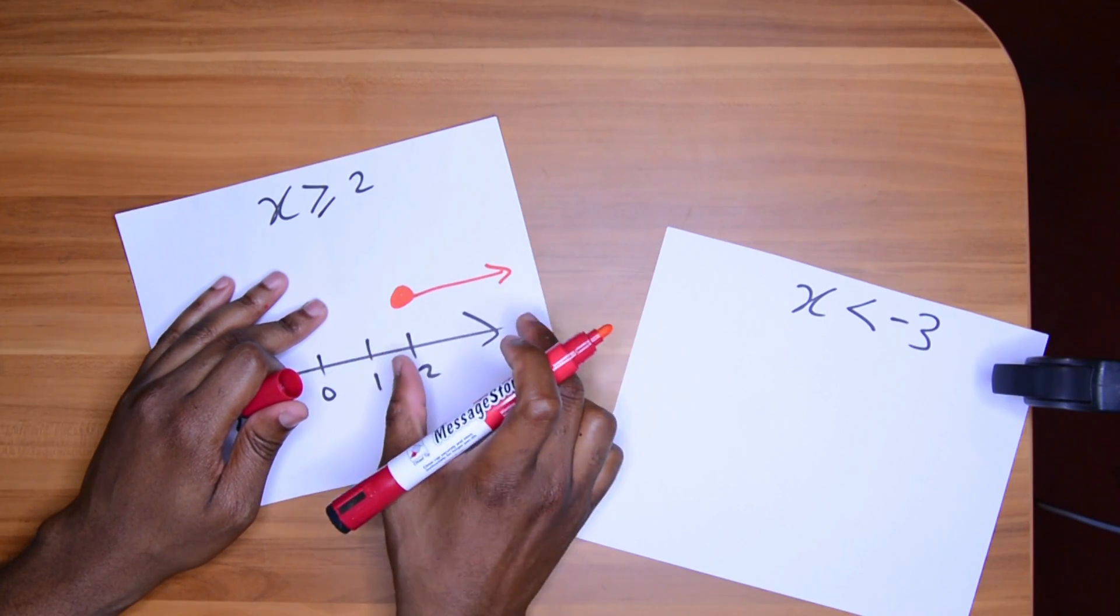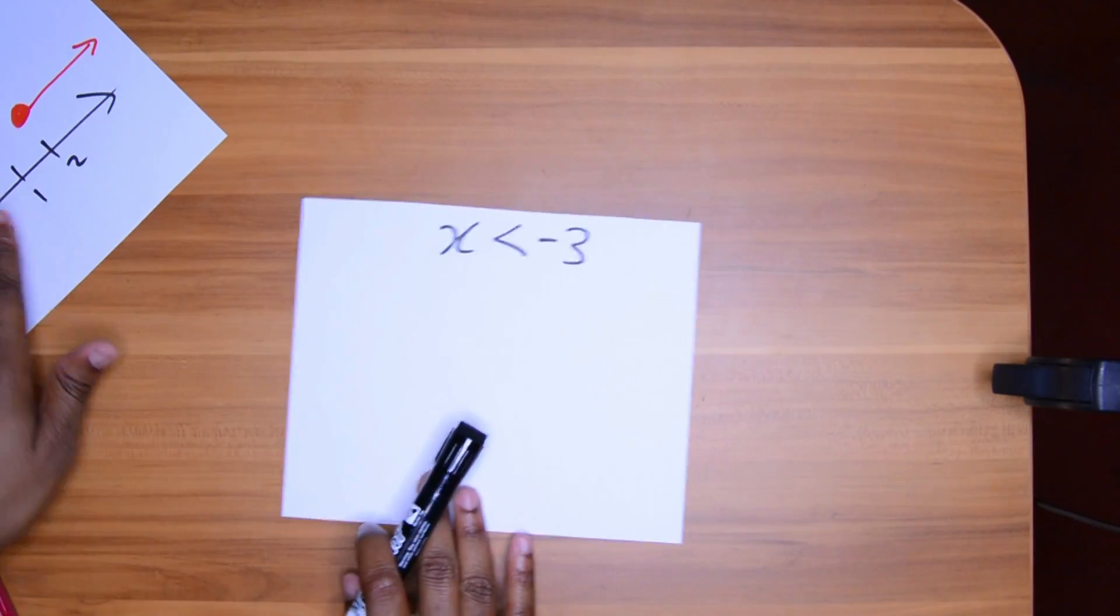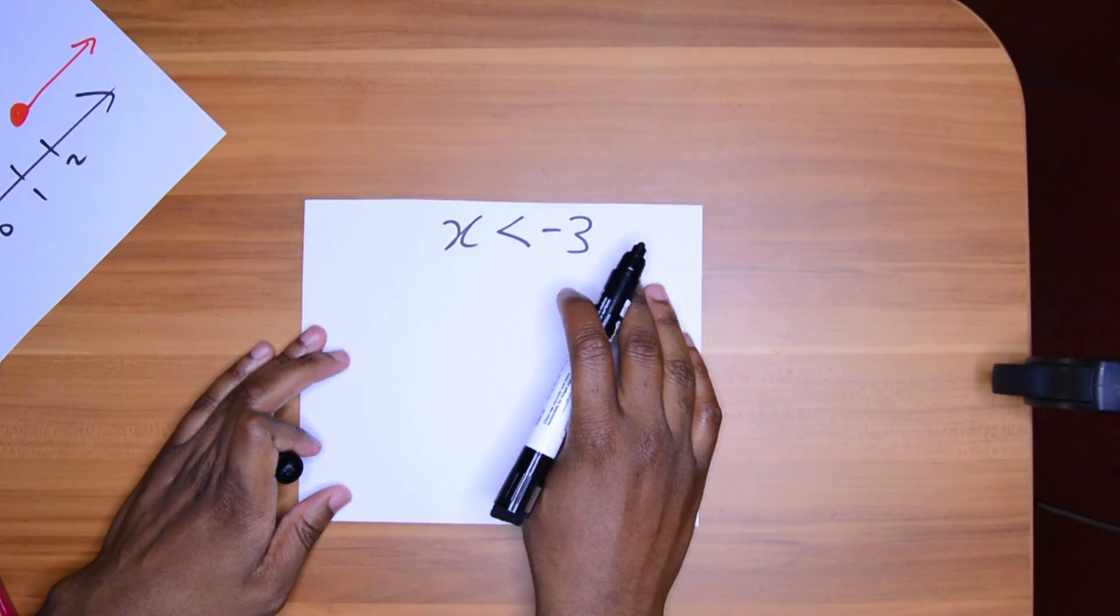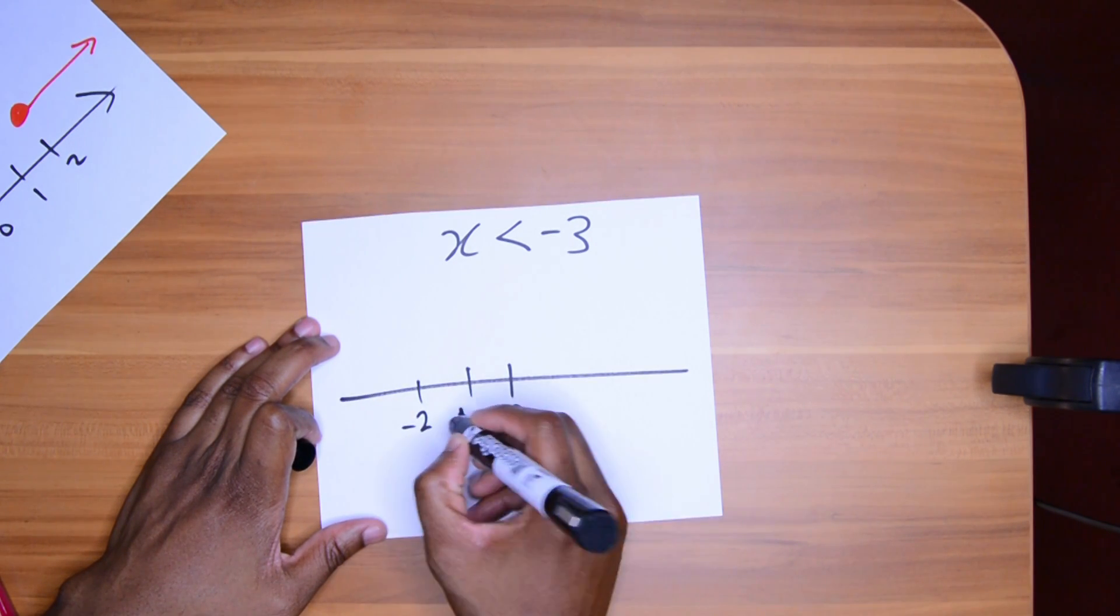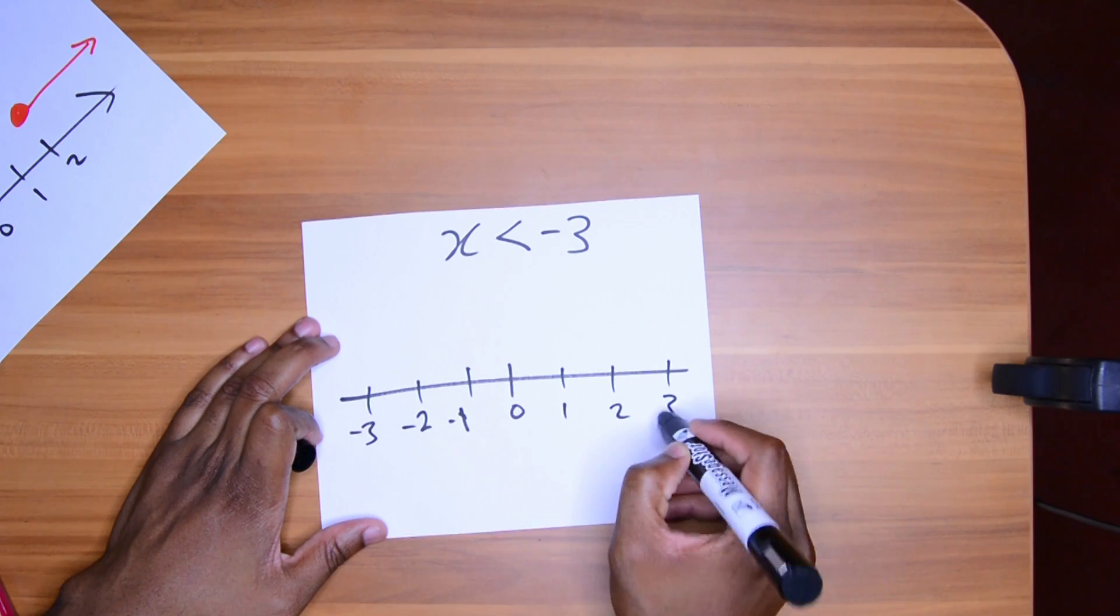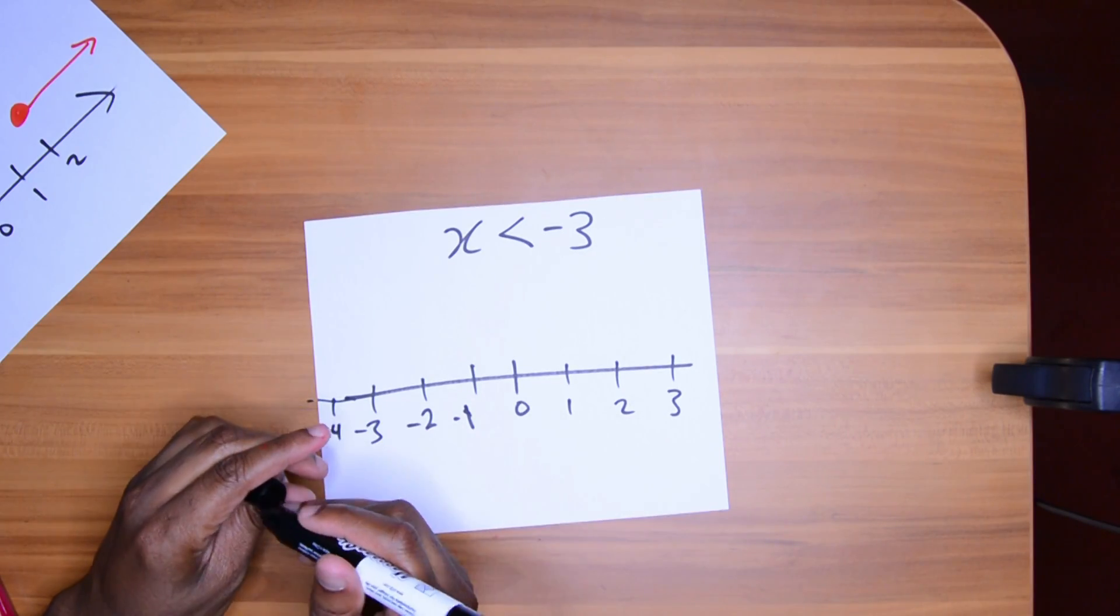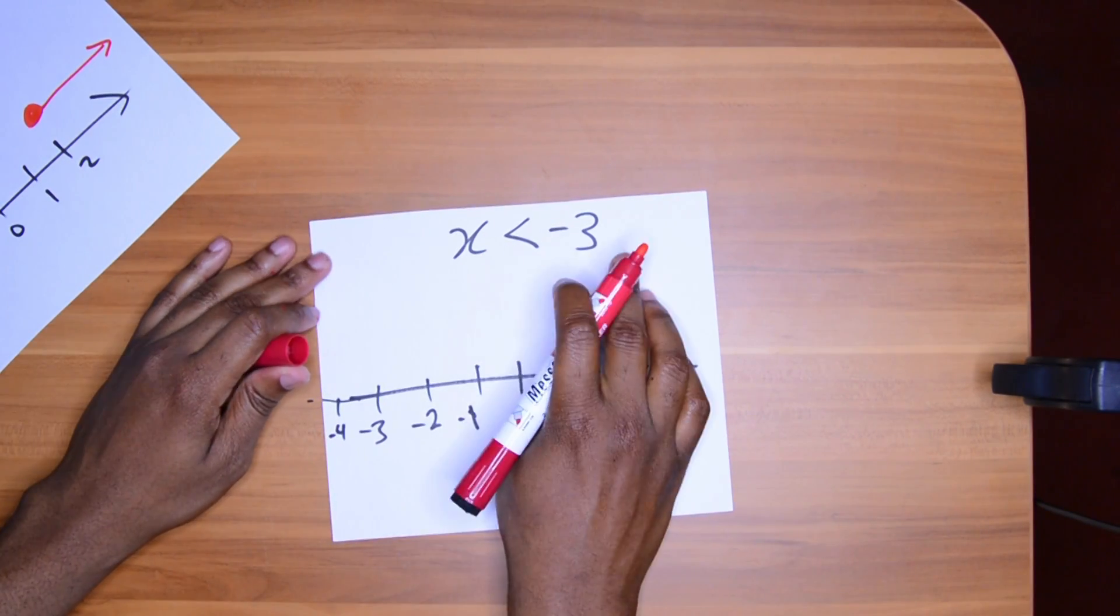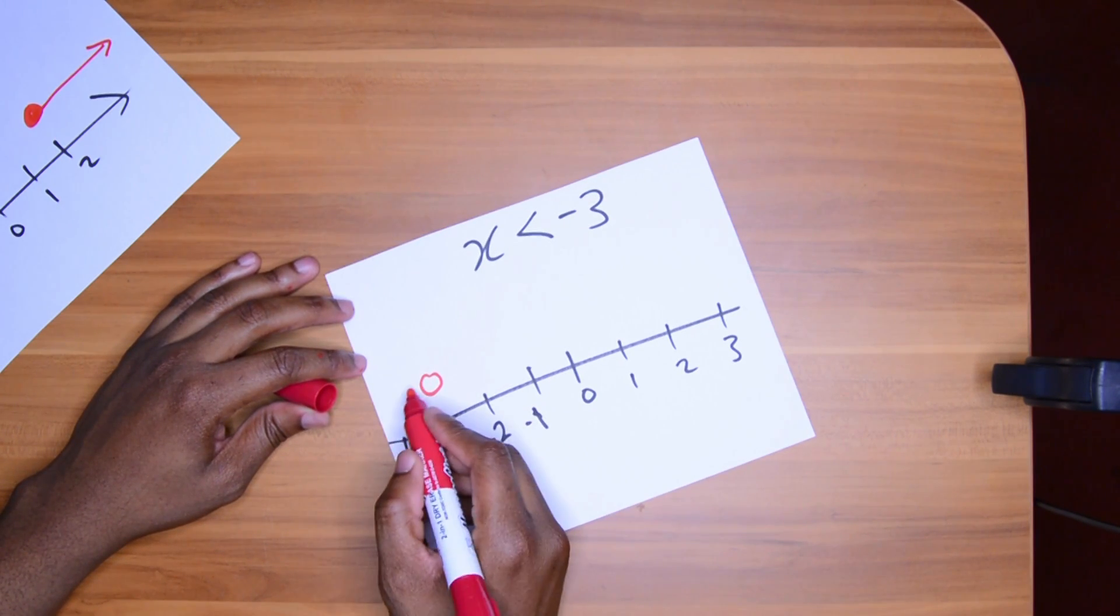In the second case, you have X is less than negative three. Zero, one, negative two, negative one, negative three. One, two, three. Negative four. All right, this number line is not the best number line in the world, but I think it could show the point. So, X is less than negative three. Draw your circle there. Since it must be less than, go in this direction.